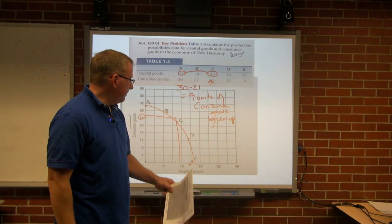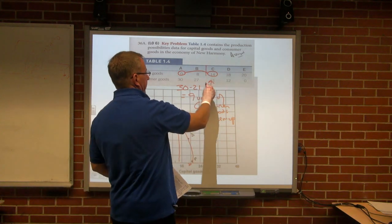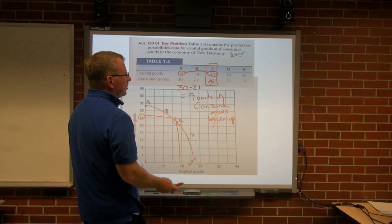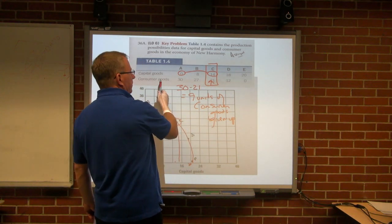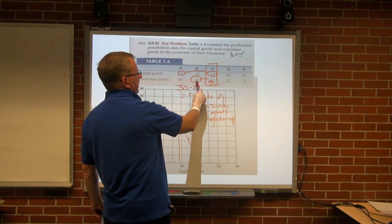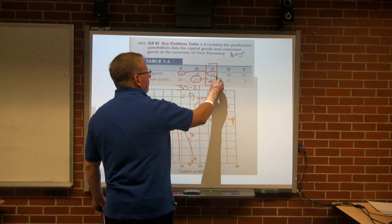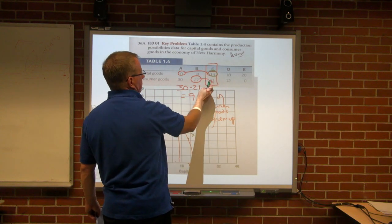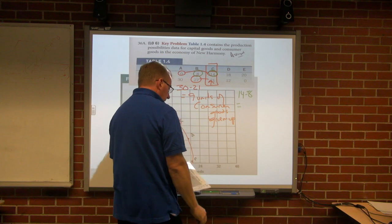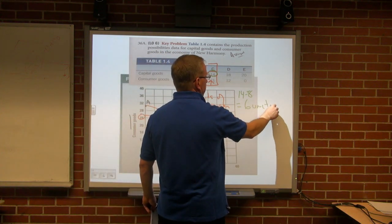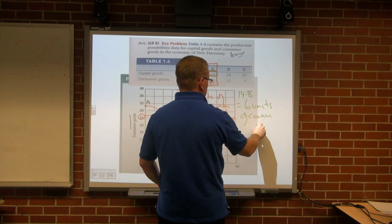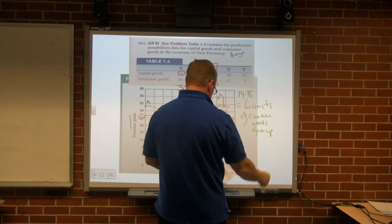Part E: assuming the economy is producing at combination C, what is the total cost of 6 additional consumer goods? We're at 21 consumer goods and want 6 more, so 21 plus 6 is 27. In order to do that, we go from 14 capital goods - which is what is made at 21 - down to 8. So 14 minus 8 indicates we'd have to give up 6 units of capital goods. That's how that works.